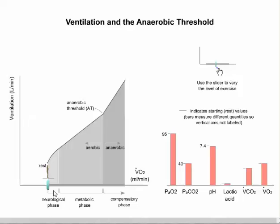Down here on the bottom, it lists neurological phase, which means basically at the start of exercise when your breathing increases in excess of what the body needs. The metabolic phase, in which your breathing pretty much keeps up with the amount of oxygen that your body needs. And then the compensatory phase, which your body really has to work to blow off those additional gases and produce those additional items that your body needs.